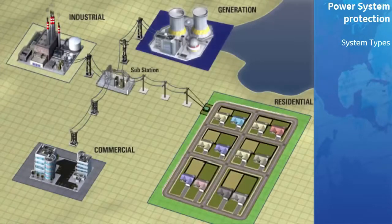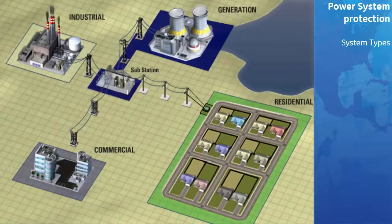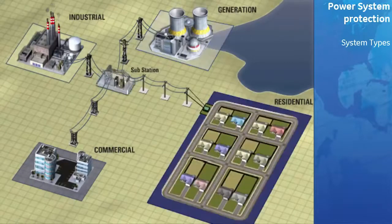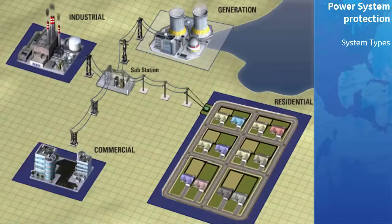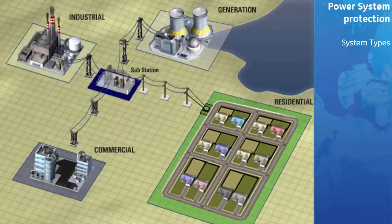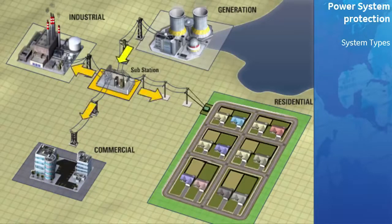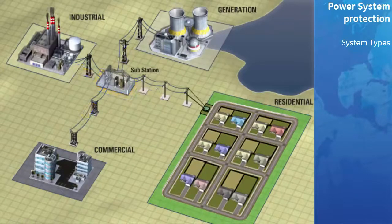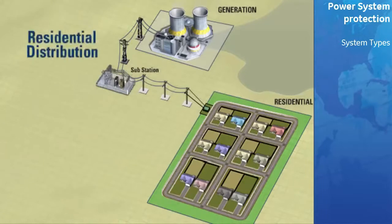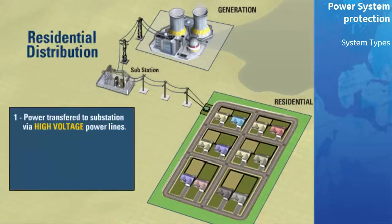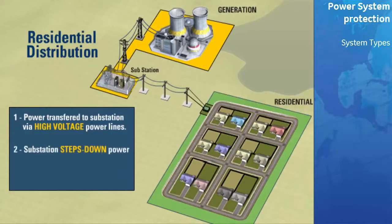The three-phase power travels from the generating station over high power lines to substations. Different voltages are required for residential, commercial, and industrial customers. At substations, breakers and transformers route and step down the voltage to a suitable level for distribution. Let's take a look at a typical distribution system for a residential customer. To recap: the generated power is transmitted via high power transmission lines to a substation, where it is stepped down and routed to residential users.